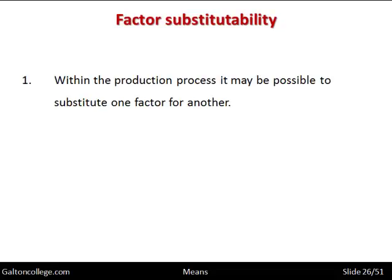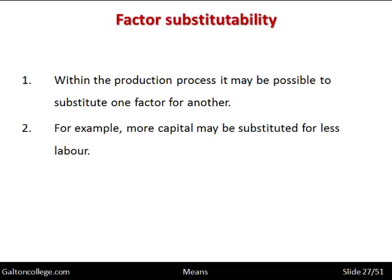Within the production process it may be possible to substitute one factor for another — for example, more machines and less workers. So more capital substituted for less labour. More and more capital equipment of all sorts — ranging from very small hand-held pieces of capital to larger fixed pieces — are substituting for labour.